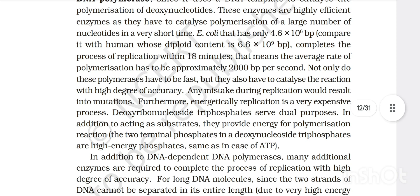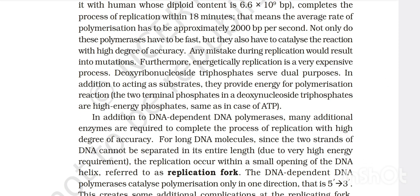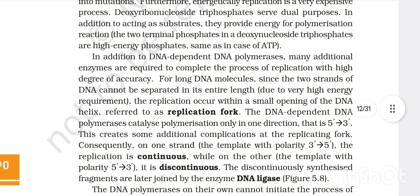That means the average rate of polymerization had to be approximately 2000 base pairs per second. Not only do these polymerases have to be fast, but they also have to catalyze the reaction with a high degree of accuracy. Any mistake during replication would result into mutation. Deoxyribonucleotide triphosphates serve dual purpose - in addition to acting as substrate, they provide energy for polymerization reaction. The two terminal phosphates in a deoxynucleoside triphosphate are high energy phosphates, same in case of ATP.